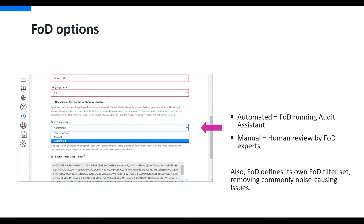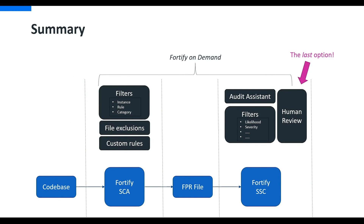If you're using Fortify on Demand, much of this is already done for you behind the scenes. Fortify on Demand defines its own filter sets - these are filter sets you'd be able to see if you were to download an FPR file and open it within Audit Workbench. Fortify on Demand also uses Audit Assistant to auto-predict true and false positives, but you can also have the manual human audit if you choose to do so by selecting manual. Noise can be relatively lower for Fortify on Demand customers as we do much of this behind the scenes before your organization takes a look at anything. But as I mentioned earlier, there are additional steps those customers can take to reduce noise even further.